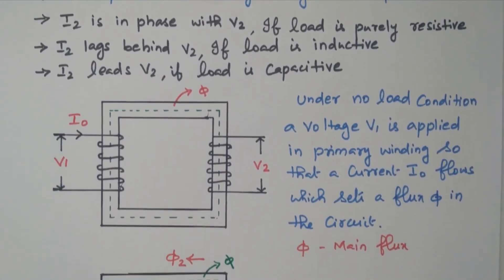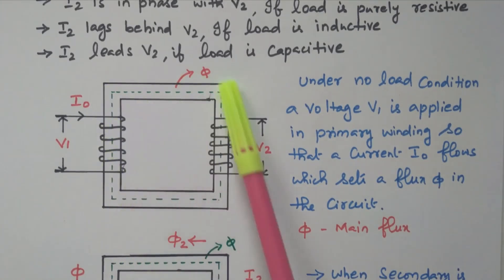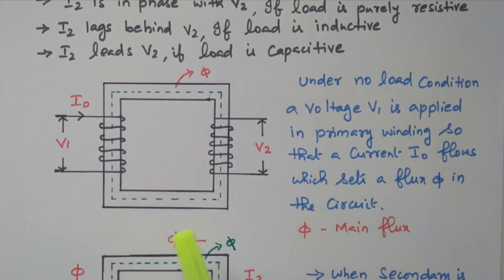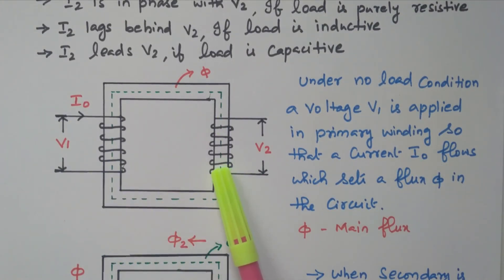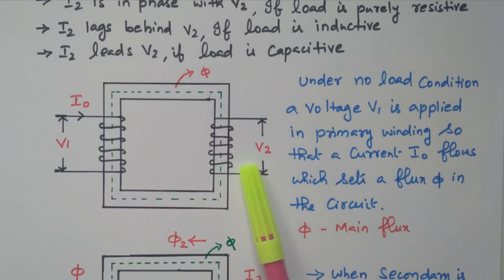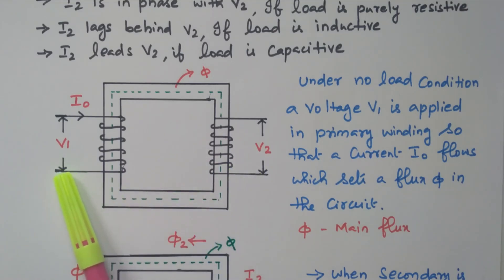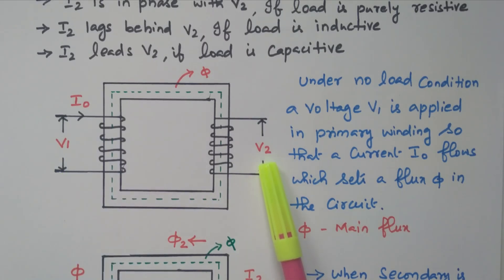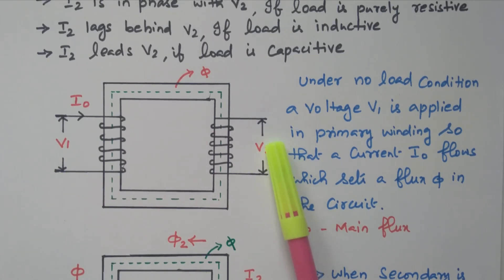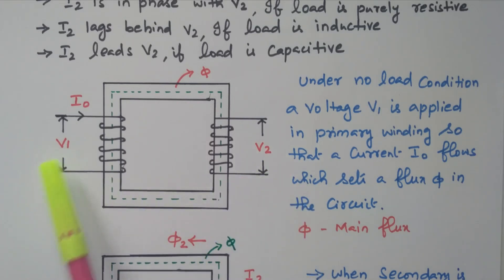Refer the diagram. Here we have the iron core — a square type iron core. This is the primary winding, and this is the secondary winding. The primary winding is wound on one side of the core; secondary winding is wound on another side of the core. V1 is the applied voltage to the primary. V2 is the voltage available at the secondary. But here it is not loaded — the secondary is open circuit, not connected with any load.